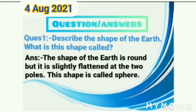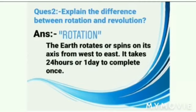Start the questions with blue color pencil. Question number one: Describe the shape of the Earth. What is the shape called? Answer — write it with pencil: The shape of the Earth is round, but it is slightly flattened at the two poles. This shape is called a spheroid.